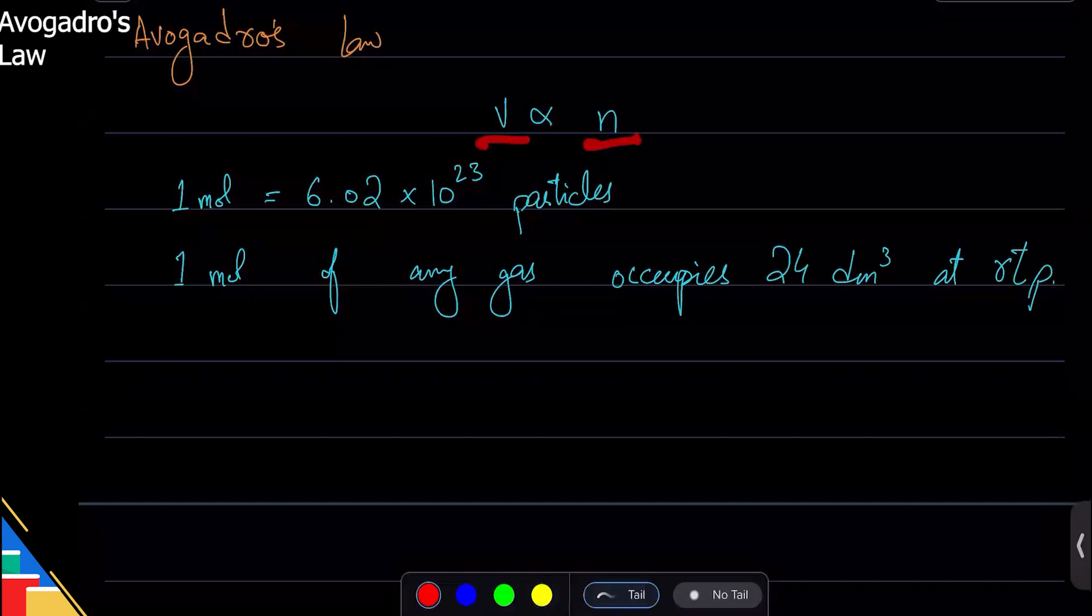Volume and number of particles. And if you fix the third thing as well, the fourth will automatically be fixed. And that's why mole works for us. If you fix the number of particles, then the volume gets fixed as well.